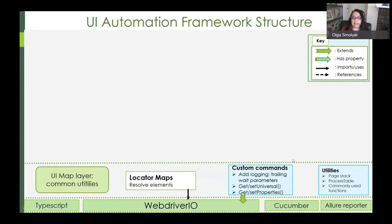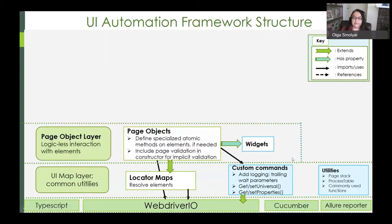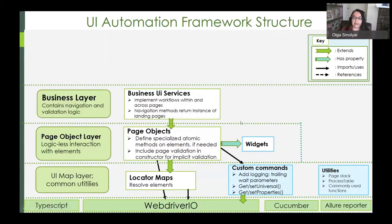Whereas the rest of the framework is project or team specific. The page object layer facilitates logicless interaction with elements. Page object classes extend locator maps and define custom atomic methods on elements, if needed. They also include page validations in their constructor for implicit validation. They can also refer to common widgets and panels.